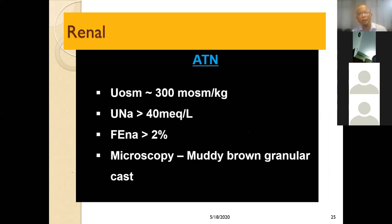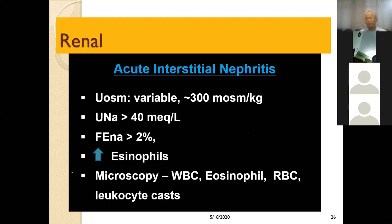In renal cause due to acute tubular necrosis, urinary osmolality will be equal to 300 milliosmol/kg, urinary sodium will be more than 40 mEq/L, fractional sodium will be more than 2%, and microscopy will show muddy brown granular casts. In acute interstitial nephritis, urinary osmolality is variable up to 300 milliosmol/kg, urinary sodium more than 40 mEq/L, fractional sodium more than 2%, with more eosinophils — especially in NSAID-induced interstitial nephritis. Microscopy shows WBCs, eosinophils, RBCs, and leukocyte casts.